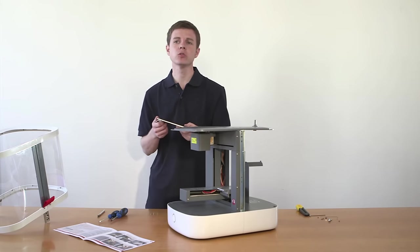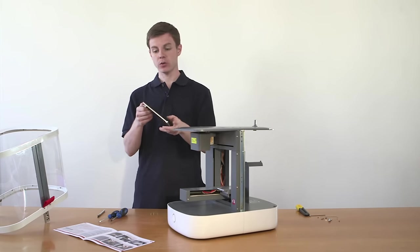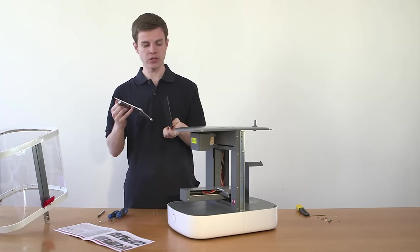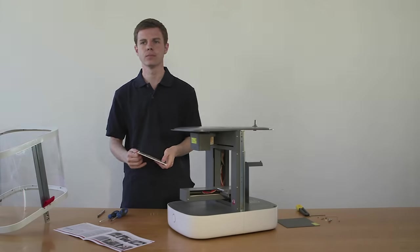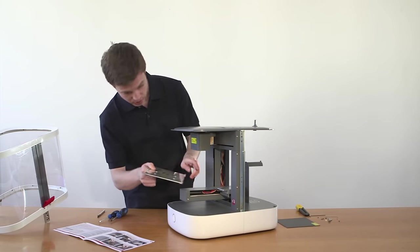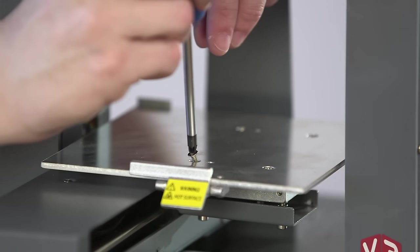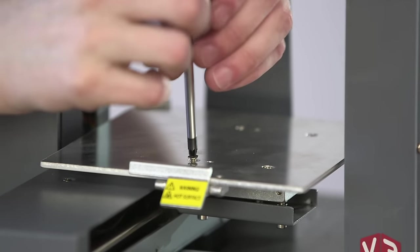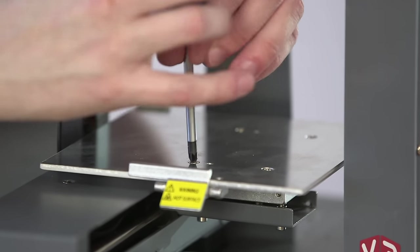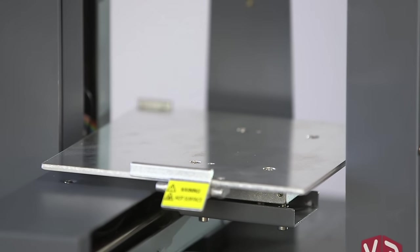When you unpack the build plate, you will find it attached to the build plate base. You'll need to unclip it in order to attach the base plate to the printer. Now attach the build plate base to the build support using the four countersunk bolts supplied. Make sure you get the plate the right way round. The clip goes to the front of the printer. Ensure the bolts are driven fully home and don't stick out at all.